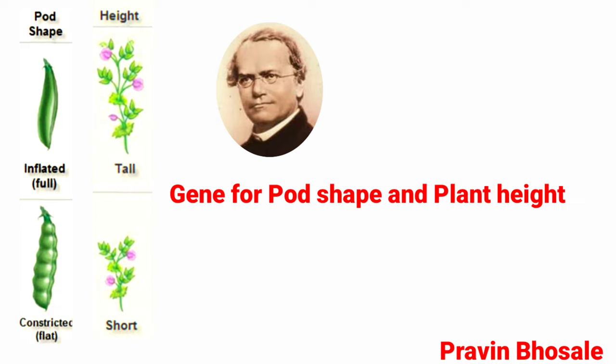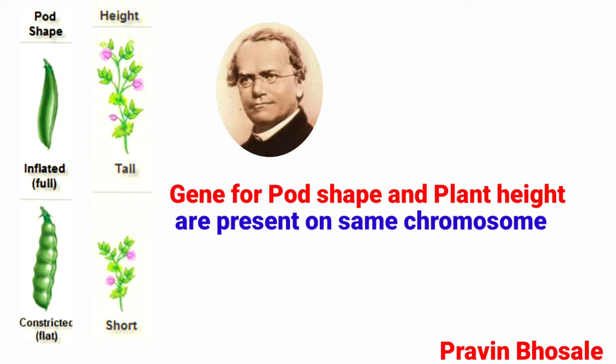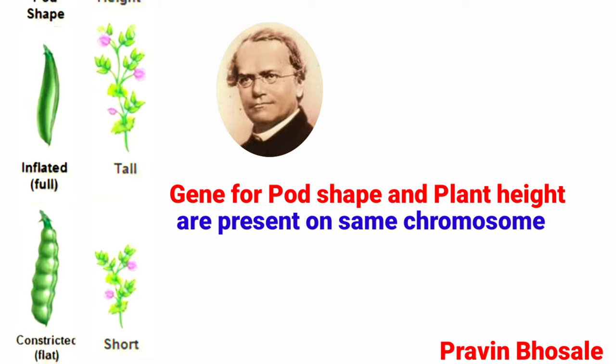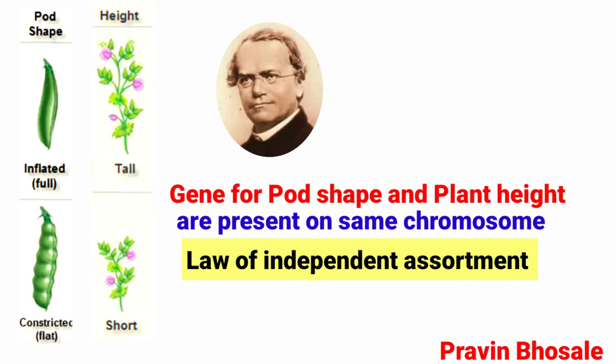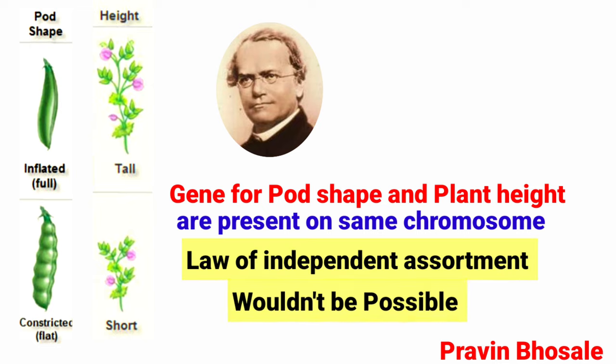Mendel never knew about linkage because he never combined pod shape and plant height in a dihybrid cross. Genes for pod shape and height are present on the same chromosome. If Mendel would have crossed them, the law of independent assortment wouldn't have been possible.